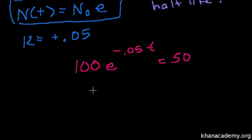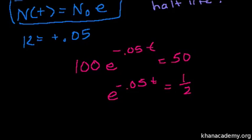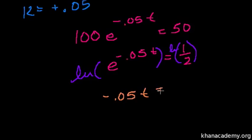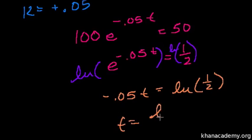We solve for t. Divide both sides by 100. You get e to the minus 0.05t equals one-half. Take the natural log of both sides. The natural log of e to anything is just that value, so minus 0.05t equals the natural log of one-half. Then t equals the natural log of one-half divided by minus 0.05. Let's figure out what that is.